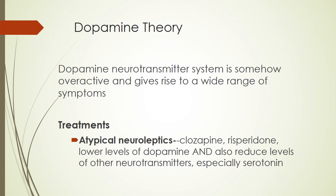The other kind of neuroleptic — a much more recent development — are called atypical neuroleptics, or not-typical neuroleptics. You'll see medications like Clozapine and Risperdone, and they lower levels of dopamine and also reduce levels of other neurotransmitters, especially serotonin. So it's a much more comprehensive type of scenario in terms of what neurotransmitters are being controlled.